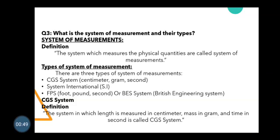There are three types of system of measurement. Number one: CGS system. Number two: System International (SI). Number three: FPS system, also known as the British Engineering System (BES). The CGS system is defined as the system in which length is measured in centimeters, mass in grams, and time in seconds.